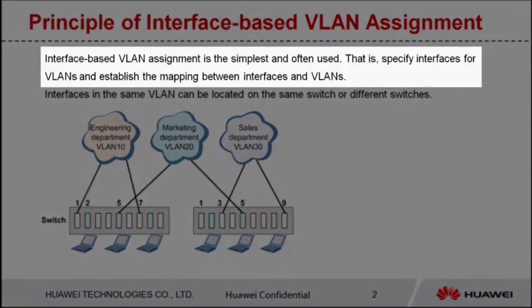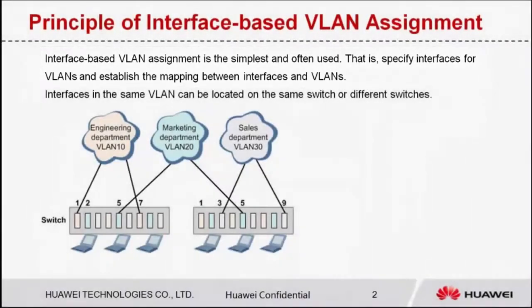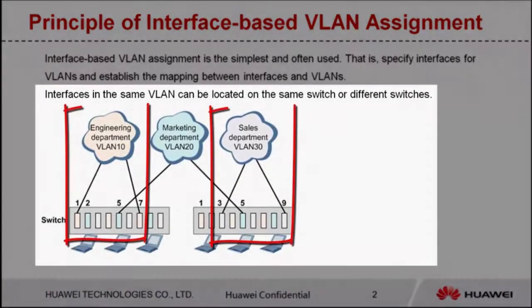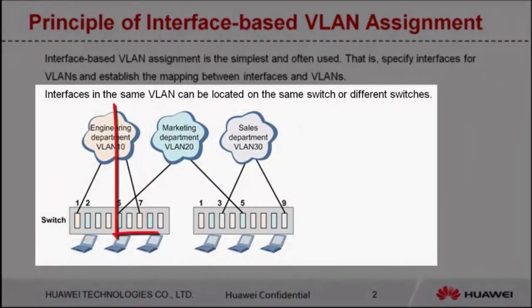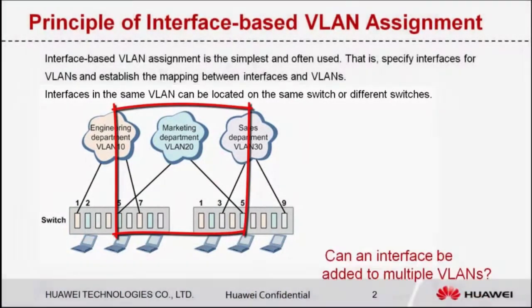Interface-based VLAN assignment is the simplest and most often used method. It specifies interfaces for VLANs and establishes the mapping between interfaces and VLANs. Interfaces in the same VLAN can be located on the same switch or on different switches.